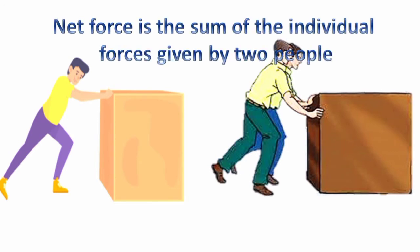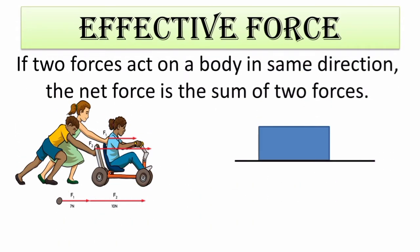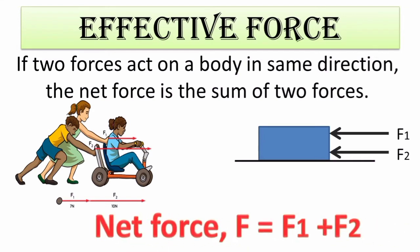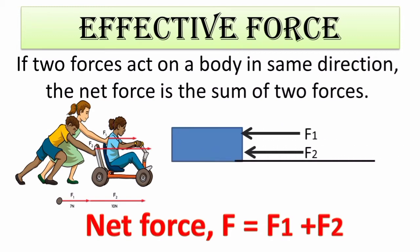Let us see what will be the effective force in certain examples. If two forces act on a body in the same direction, the net or effective force on that body will be the sum of the two forces. For example, if F1 and F2 are two forces acting on the same body in the same direction, then the total force acting on that body will be F = F1 + F2. The object will move in the direction of the effective force.